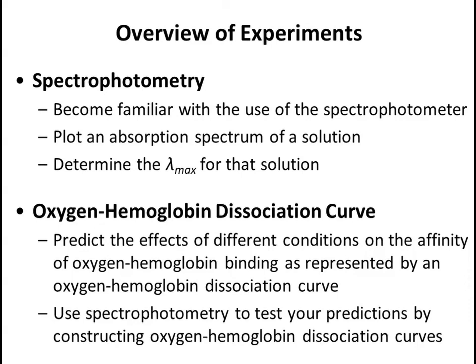This slide shows a general outline of the flow of the lab this week. First, you'll do a preliminary spectrophotometry experiment to become familiar with the use of the spectrophotometer. In that experiment, you'll plot the absorption spectrum for a solution and determine the lambda max for that solution. The objective of the main experiment is to construct an oxygen hemoglobin dissociation curve and to predict the effects of different experimental conditions on the affinity of binding between oxygen and hemoglobin, and therefore to predict how those conditions will shift the curve.